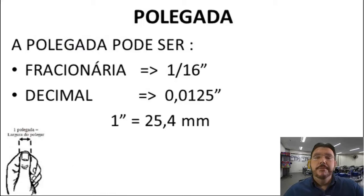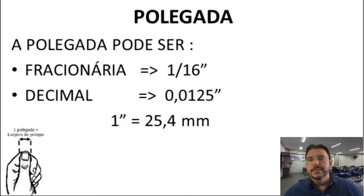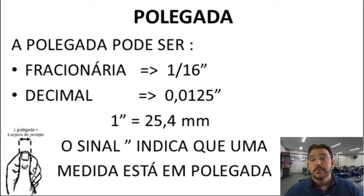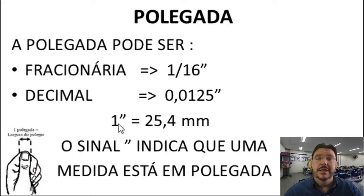O milímetro se representa como 'mm' minúsculo. Com essa relação, tudo que está em polegada pode ser convertido para milímetro e vice-versa. A polegada se representa com aspas ao lado do número — você não escreve 'polegada' do lado. Então 0,0125" indica que a medida está em polegada.